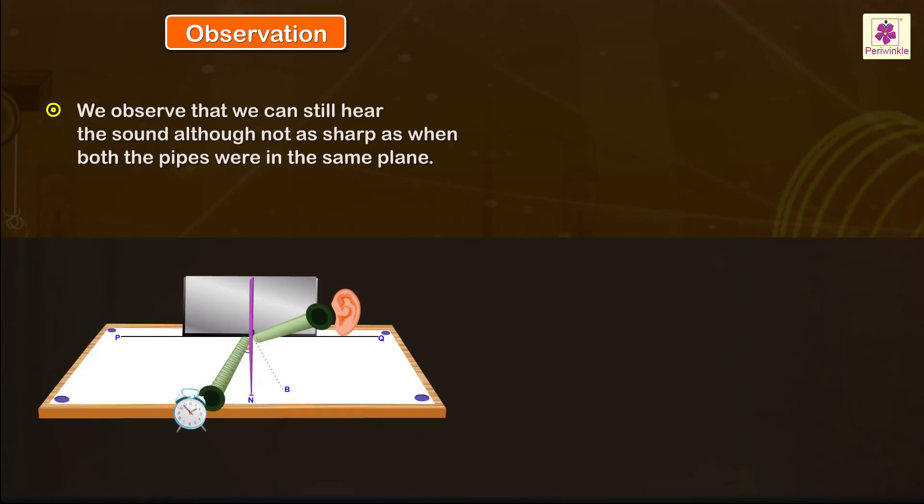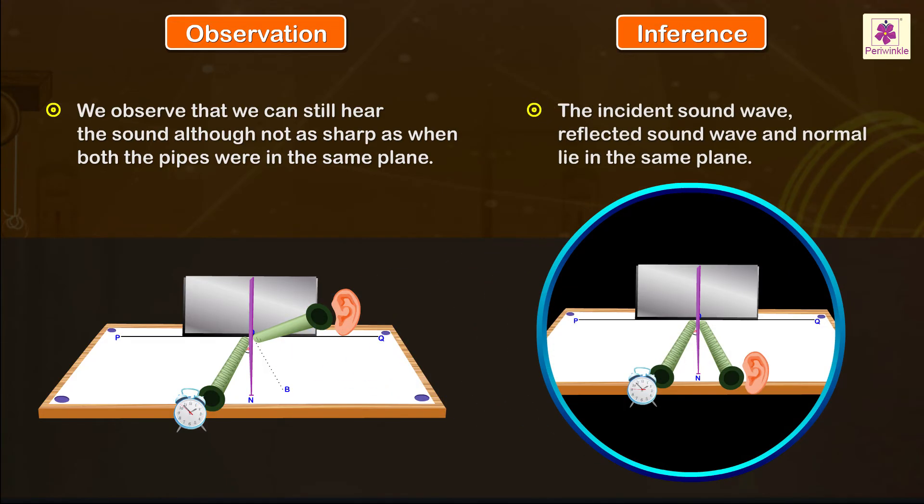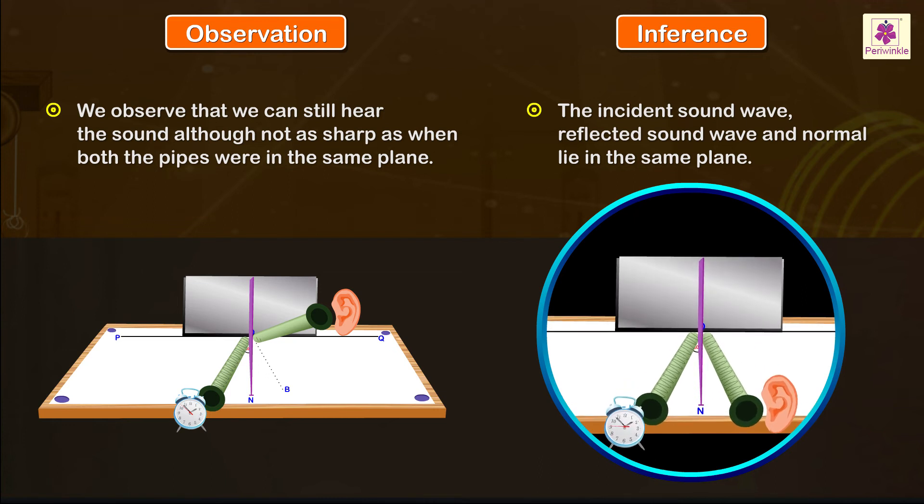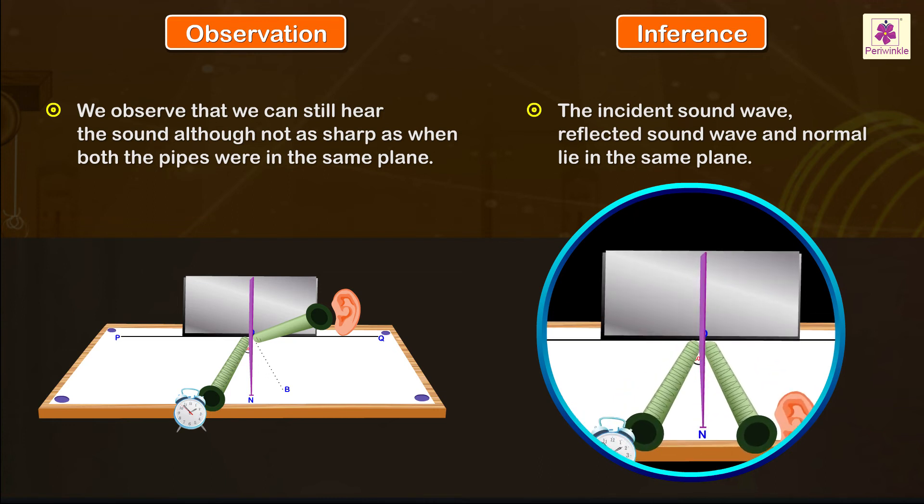Observation: We observe that we can still hear the sound although not as sharp as when both the pipes were in the same plane. Inference: The incident sound wave, reflected sound wave and normal lie in the same plane.